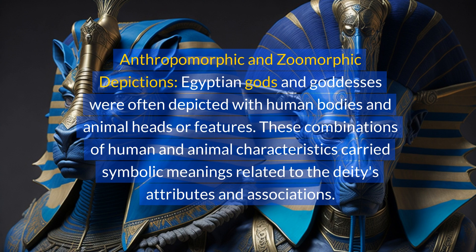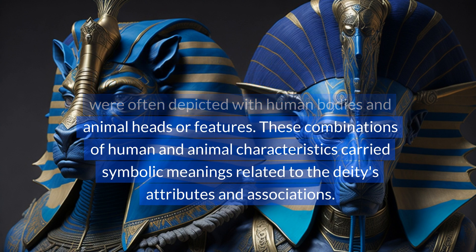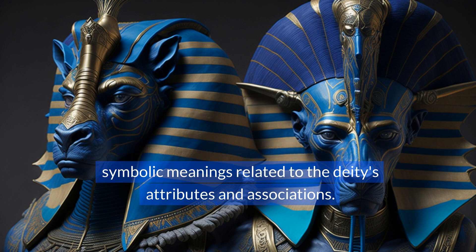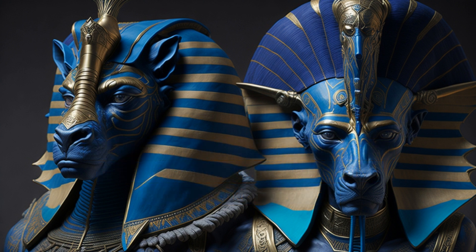Anthropomorphic and zoomorphic depictions. Egyptian gods and goddesses were often depicted with human bodies and animal heads or features. These combinations of human and animal characteristics carried symbolic meanings related to the deities' attributes and associations.